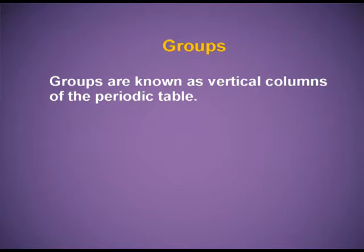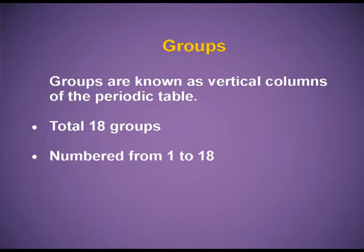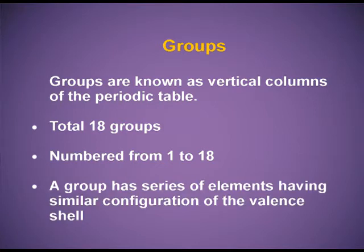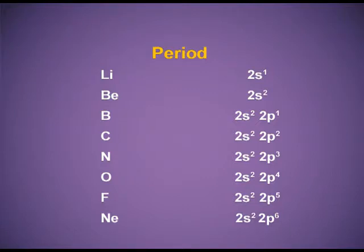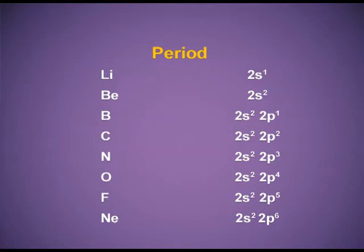Groups — the vertical columns of the periodic table are known as groups. There are a total of 18 groups numbered from 1 to 18. A group has a series of elements having similar configuration of the valence shell. For example, the second period from lithium to neon: lithium has valence shell configuration 2s1; beryllium (atomic number 4) is 2s2; boron (atomic number 5) is 2s2 2p1; carbon is 2s2 2p2; nitrogen is 2s2 2p3; oxygen is 2s2 2p4; fluorine is 2s2 2p5; and neon is 2s2 2p6.